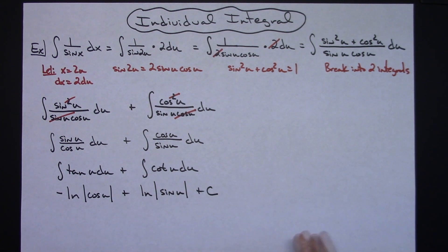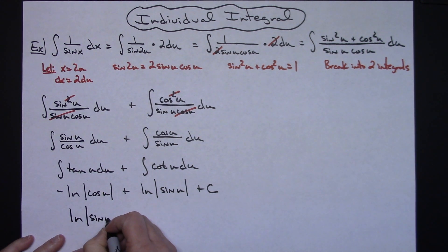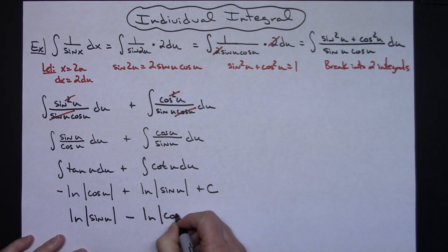Now we want to keep going and simplify this a little bit more. This has got a negative and it's in front. So I'm going to rearrange them so that I can use some log rules. So I'm going to have natural log absolute value sine u minus natural log absolute value cosine u and then our plus c.